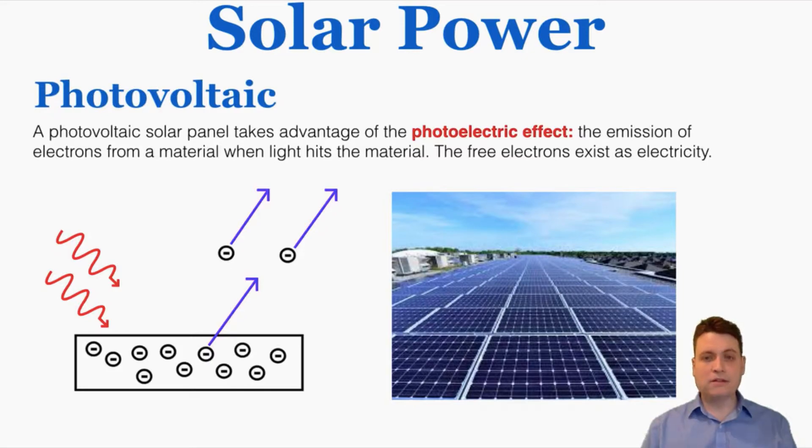A photovoltaic panel specifically takes advantage of the photoelectric effect, which is the emission of electrons from a material when light hits the material. The free electrons exist as electricity. So these generate electricity because when light from the sun hits them, the material releases some of its electrons as free energy to use.